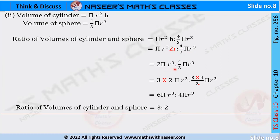Here the denominator is 3, so to eliminate it, multiply both sides of the ratio by 3. We can write 3 × 2πr³ : 3 × (4/3)πr³. This gives 6πr³ : 4πr³. We can now cancel π and π, and r³ and r³ on both sides.